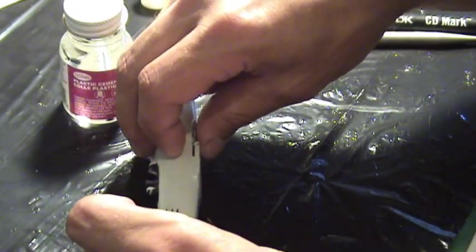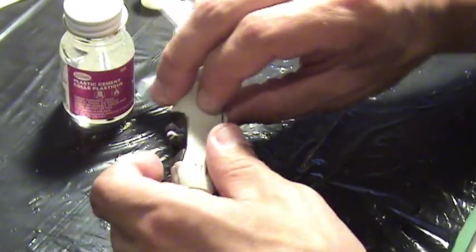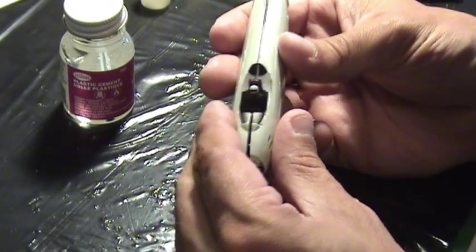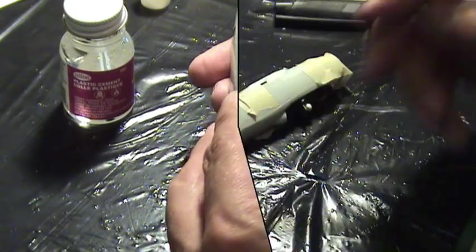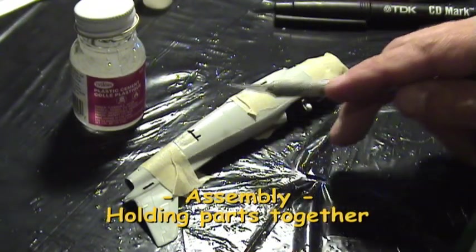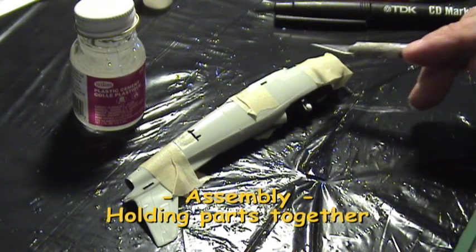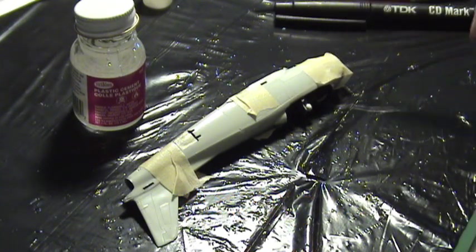Join the two fuselage halves, making sure the cockpit configuration fits properly in place. Use small pieces of masking tape to keep the two fuselage halves together while the glue dries.